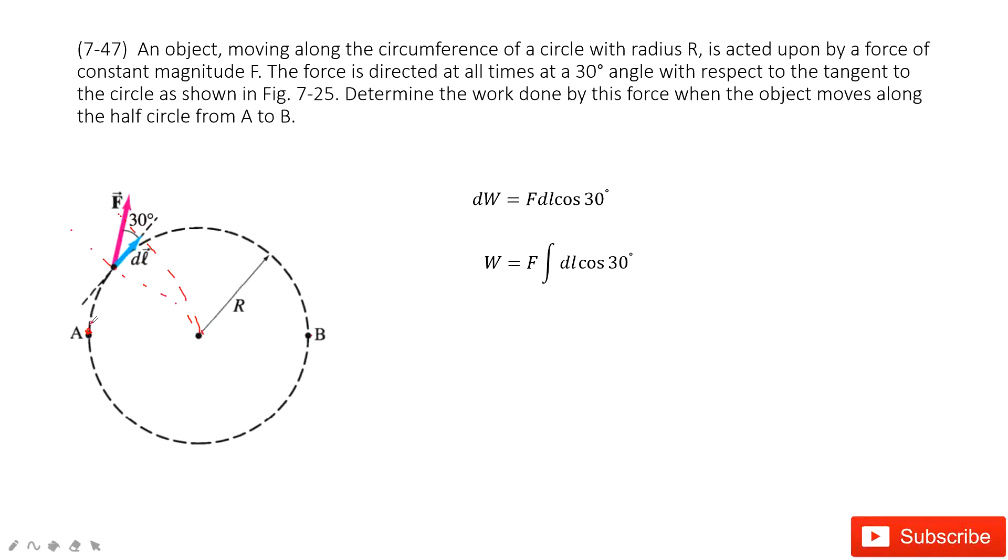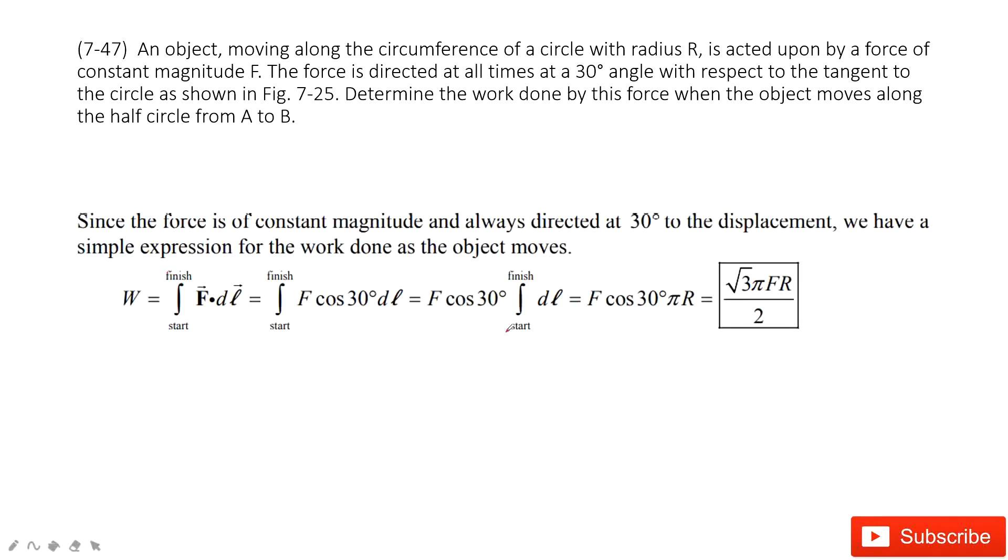Now we look at the integral for dL. So that means it's the distance this object covered from A to B. How much? Pi R. Because we know the circle, for one complete circle, the length is 2 pi R, half of it is pi R. So in this way, we can know this one equals pi R. And then we are done. Thank you.